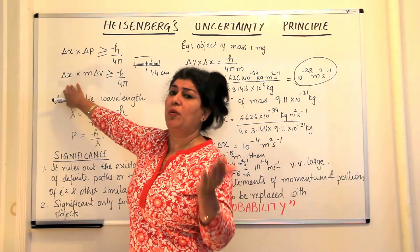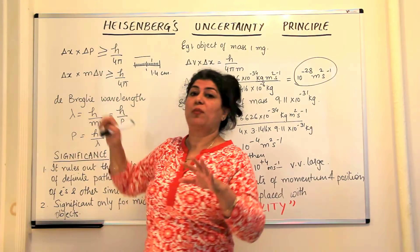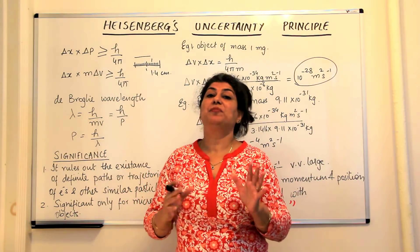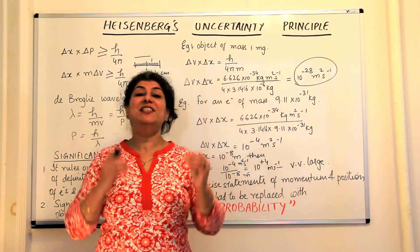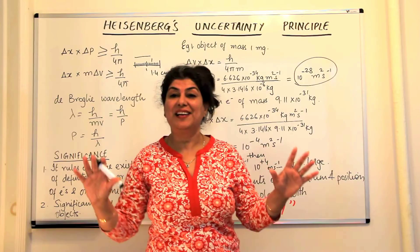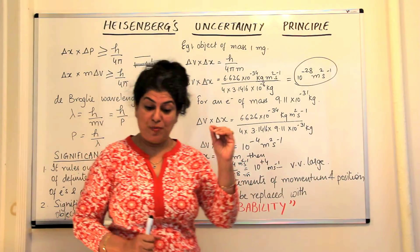Probably this is where it is present, and this is probably the path it might be following. The picture of certainty started blurring, and we started talking in terms of probability.